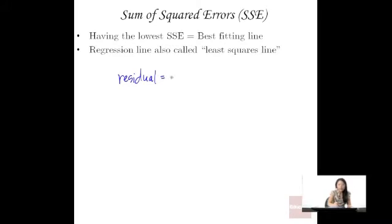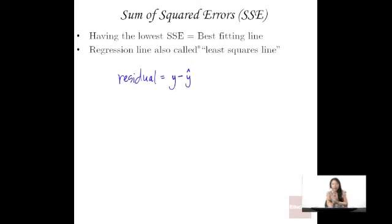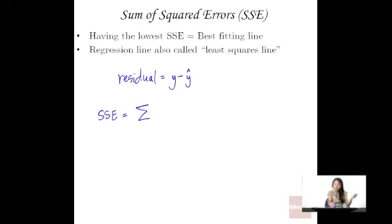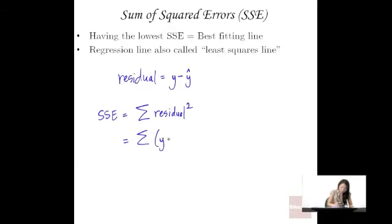The residual is the difference between Y and the predicted Y from our best fitting line. Having the lowest sum of squared errors — SSE — is really having the sum of all the squared residuals: the sum of residuals squared. Another way to write that is Y minus Y-hat, squared. This is really our quantitative measure of how good our line is.